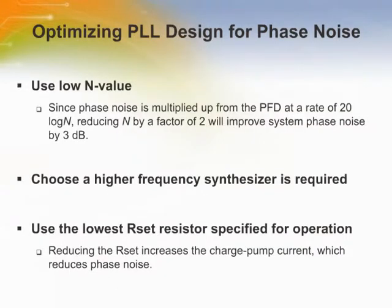There are several ways to optimize Phase Locked Loop design for phase noise. Since phase noise is multiplied up from the PFD reference frequency at a rate of 20 log N, reducing N by a factor of 2 will improve system phase noise by 3 dB. Therefore, the highest feasible PFD frequency should always be used. Choosing a higher frequency synthesizer is another way to improve phase noise performance. Reducing the R-SET increases the charge pump current, which also reduces phase noise.